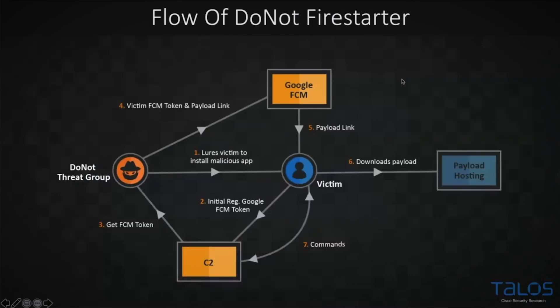Once the malware is activated, it will contact the C2, which is hard-coded, with some information. That information includes the Firebase Cloud Messaging Service token, which the operators will need in order to contact the application using the Google infrastructure. Along with that, it will also send geolocation coordinates, IP addresses, and all sorts of information that will allow the malicious operators to decide if they should send the malicious payload to the malware or not.